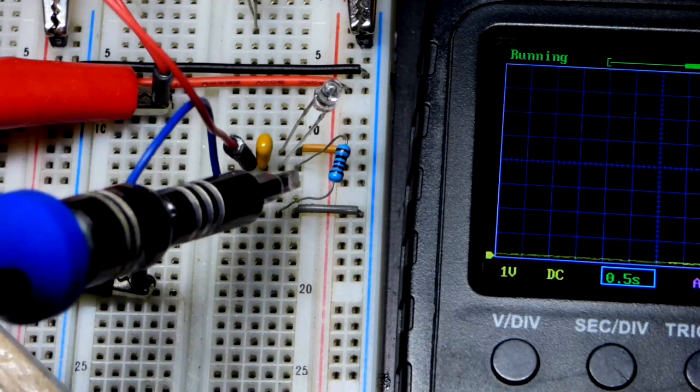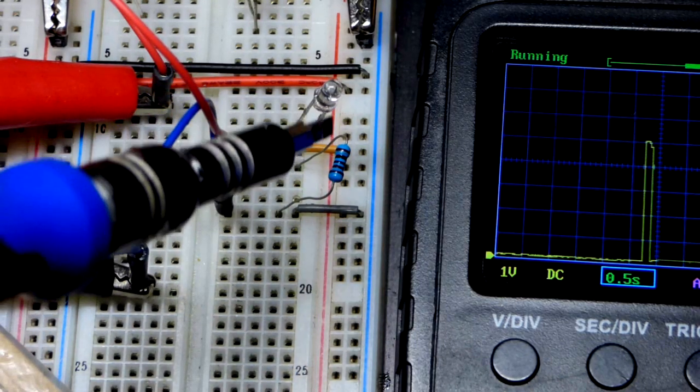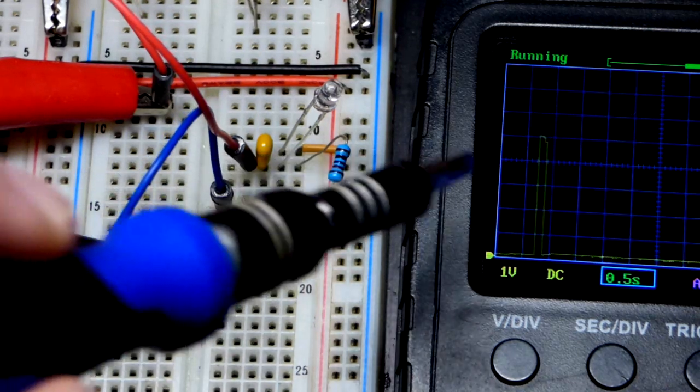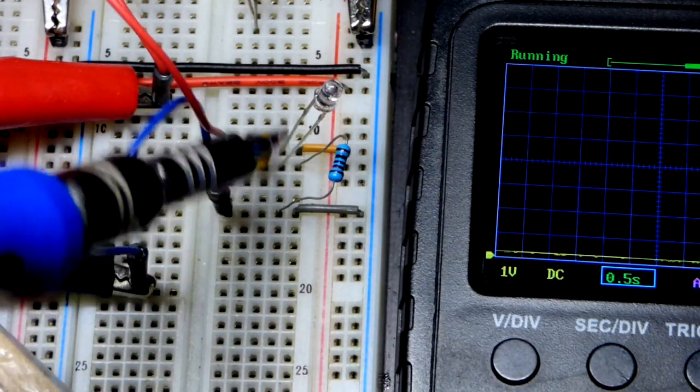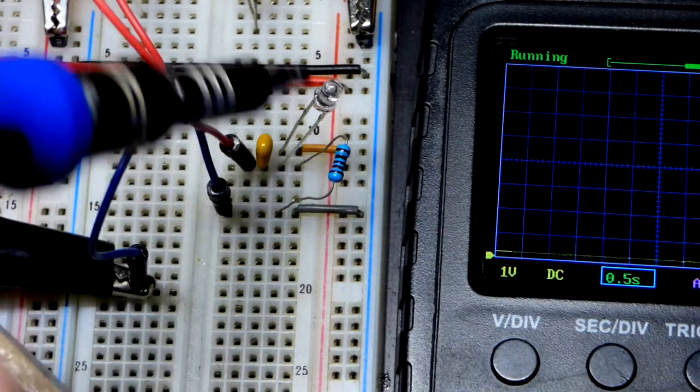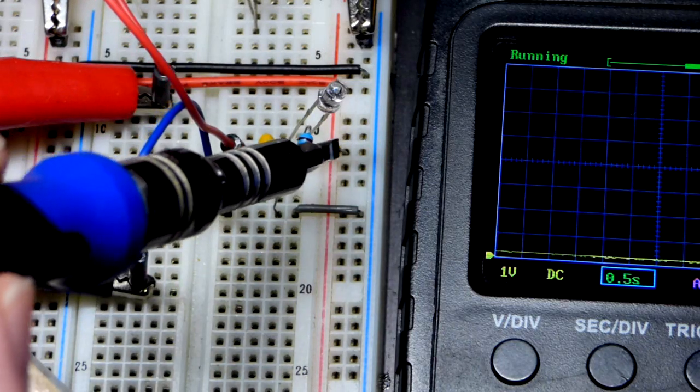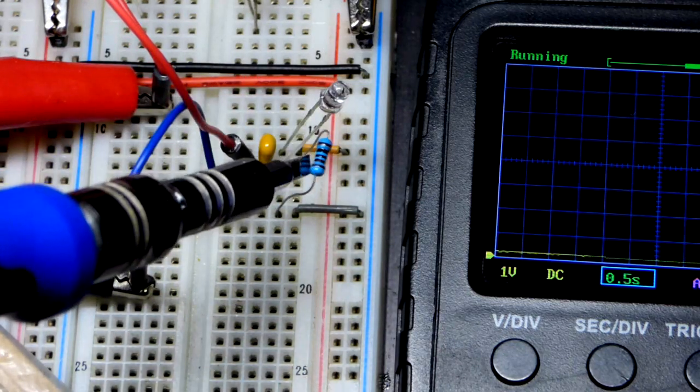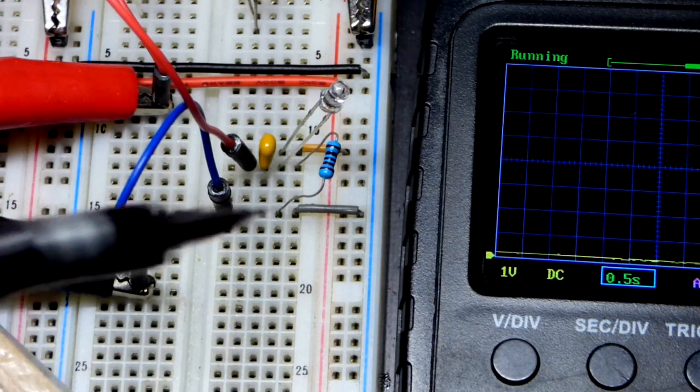We'll not worry about the capacitor yet. That's the anode, the long lead of the photodiode right there. And the short lead, the cathode up there, comes to the positive supply. So it is a reverse biased photodiode when you are using it like this.